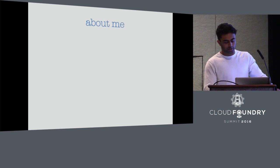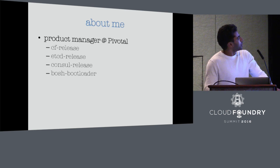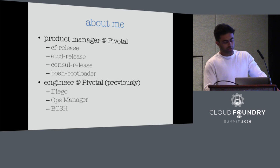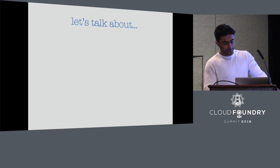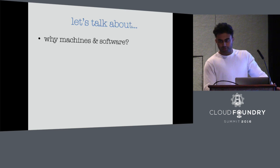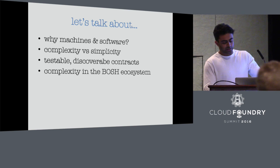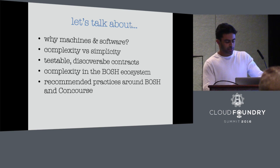A little bit about me. I'm a product manager at Pivotal. Some of the products I manage: CF release, etcd release, Consul release, and BOSH bootloader. Previously, I was an engineer working on Diego, Ops Manager, and BOSH. So what are we going to talk about? Why software in the first place — going real meta. Complexity versus simplicity. Testable, discoverable contracts. Complexity in the BOSH ecosystem. And some recommended practices around BOSH and Concourse.